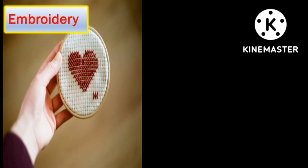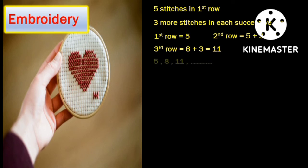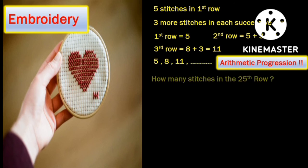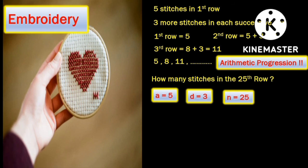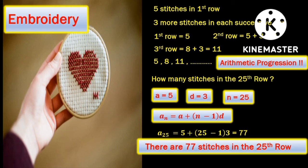Arithmetic progression is hidden even in intricate cross stitches and embroidery work. Suppose you have 5 stitches in the first row and in each successive row there are 3 more stitches — a neat little arithmetic progression is created. To find how many stitches are in the 25th row, simply substitute the values of A, D, and N in the nth term formula, and you will find that there are 77 stitches in the 25th row.